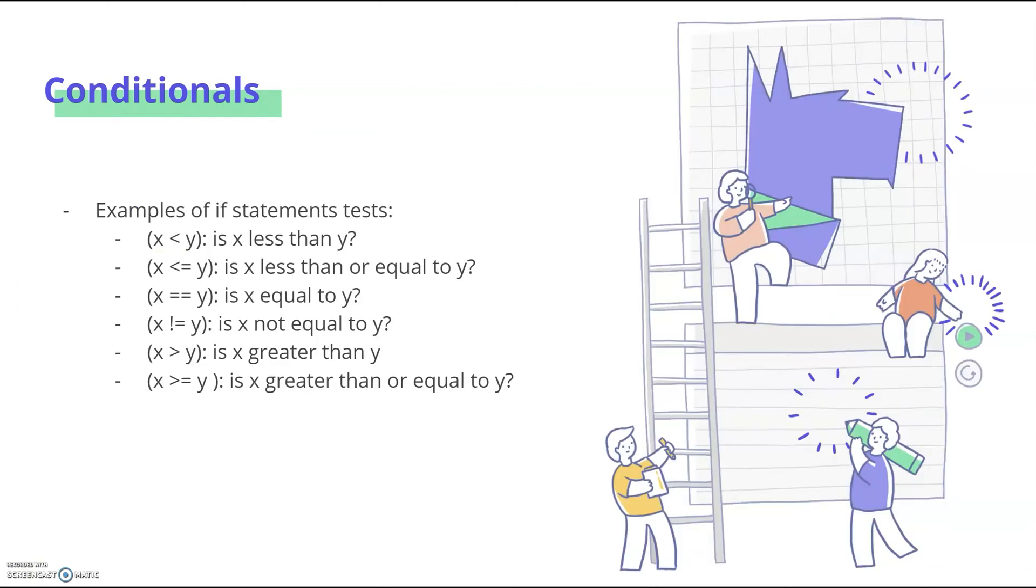Here are a few examples of if statements you can use to test for certain conditions. Is x less than y? Is x less than or equal to y? Is x equal to y? Make note that double equals tests for equality. Is x not equal to y? Again, make note that an exclamation mark and an equal sign tests for lack of equality. Is x greater than y? And is x greater than or equal to y? In all of these cases, when used in an if statement, the if body will only run when these statements are true.